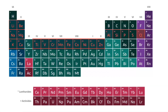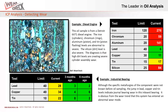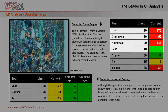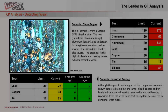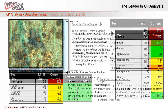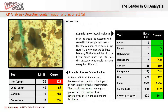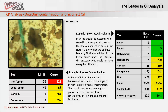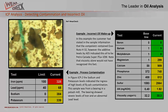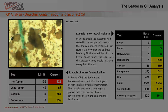This ICP instrument measures over 30 different elements in every oil sample. Some elements, such as iron, chromium, aluminum, and lead, can indicate if abnormal wear is occurring in the machine. Others, such as silicon, potassium, and sodium, can indicate the presence of contaminants, such as dirt or antifreeze, present in the oil.